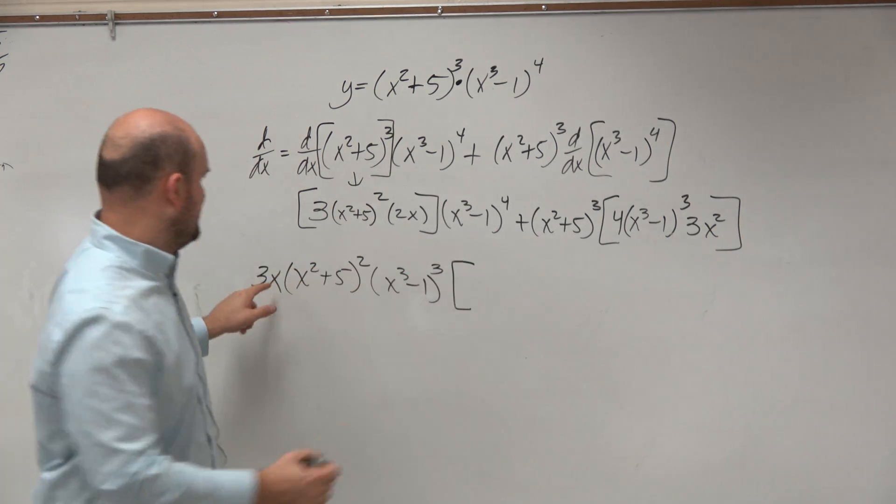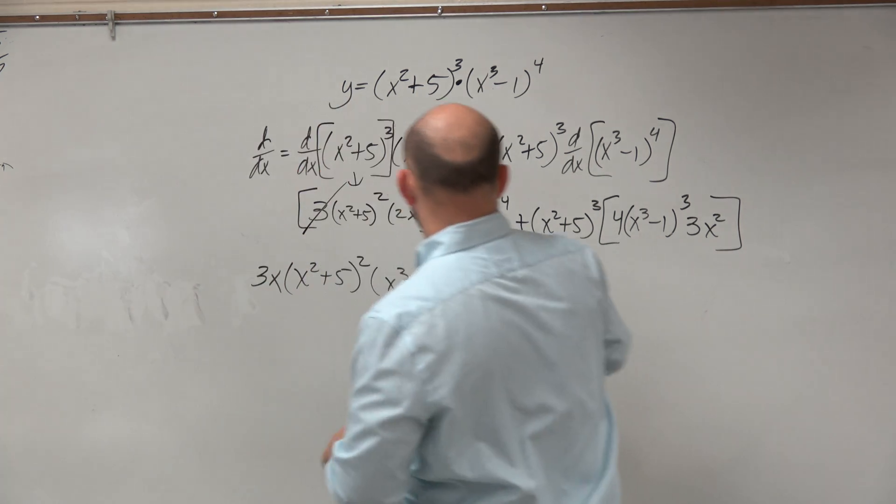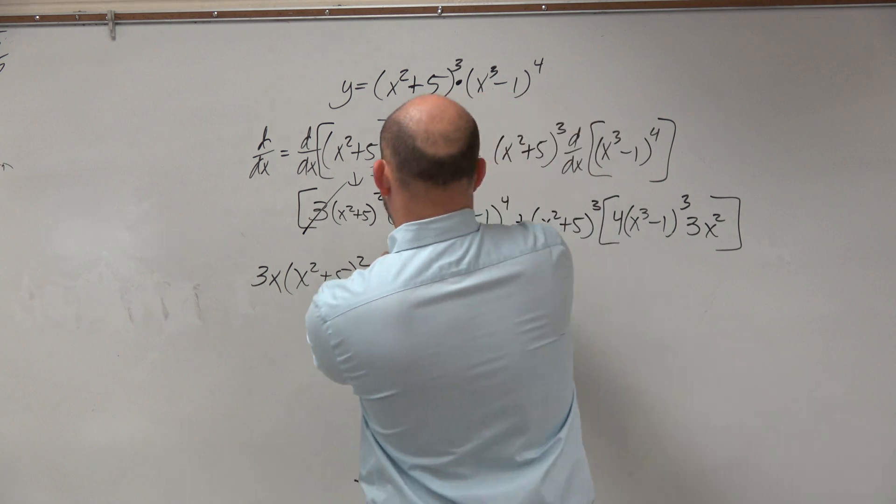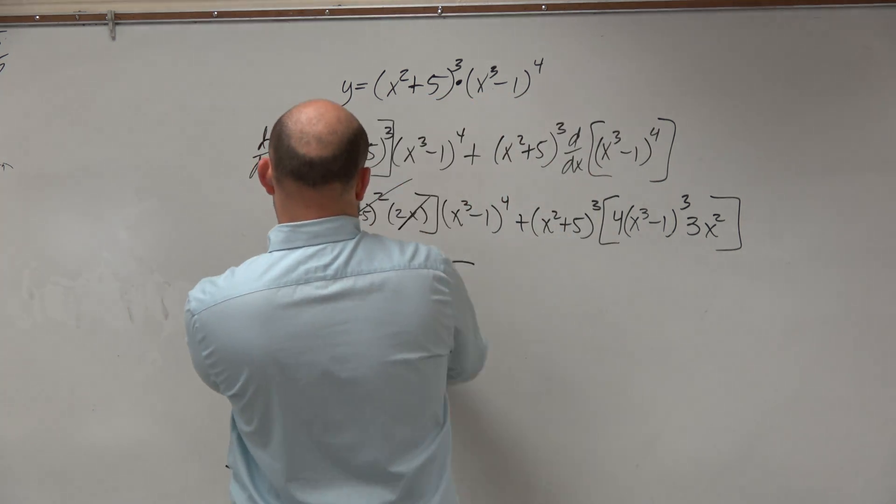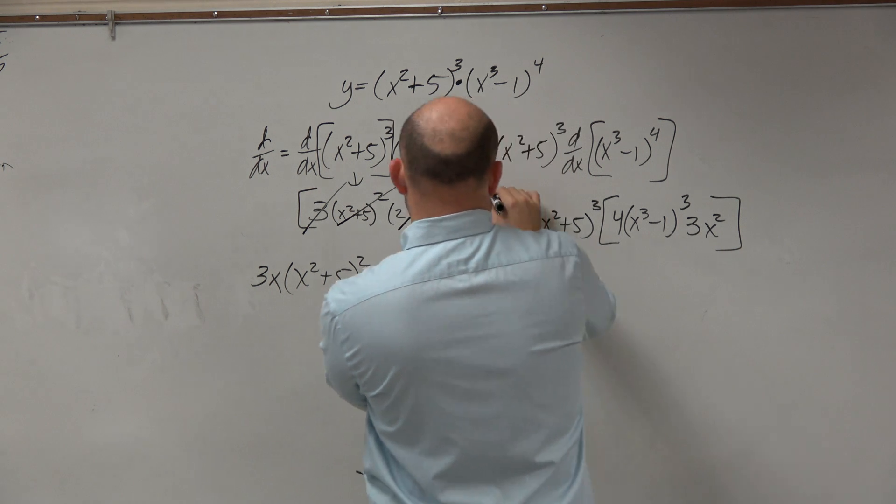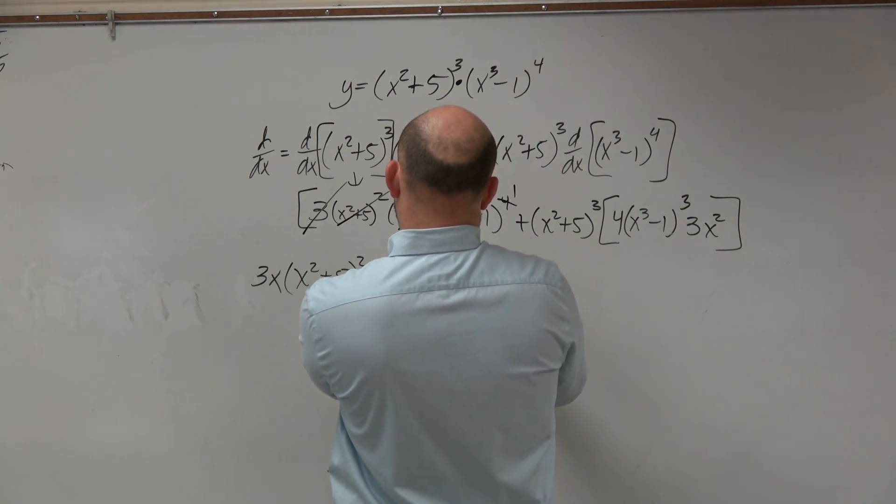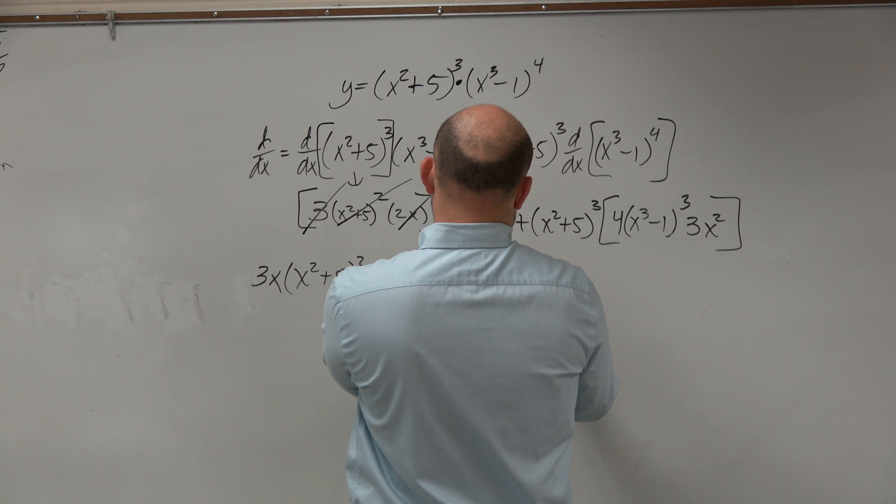So if we take those both out, the 3s would go, the x would go, and the 2x squareds would go, and then this would be to a 1. So I'd be left with 2 times x cubed minus 1.